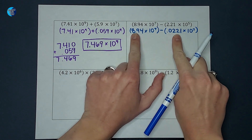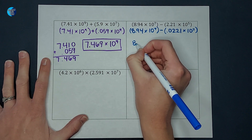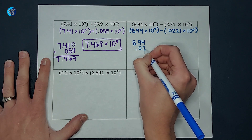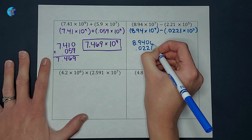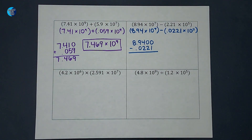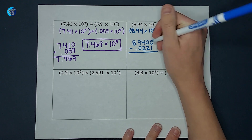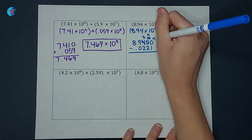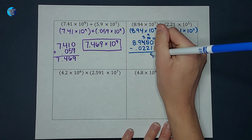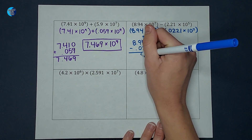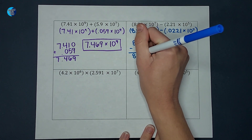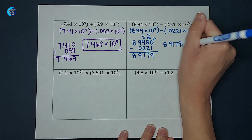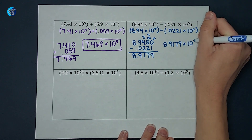Now that these match I can subtract. I have 8.94 minus 0.0221. Lining up the decimals and adding zeros, I do a lot of borrowing: 10 minus 1 is 9, 9 minus 2 is 7, 3 minus 2 is 1, 9 minus 0 is 9, bring down the decimal and 8. I end up with 8.9179 times 10 to the seventh.